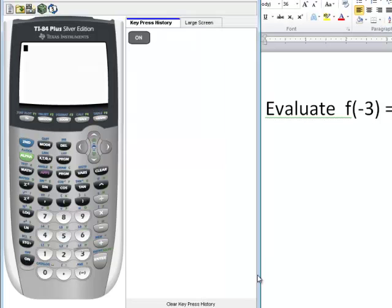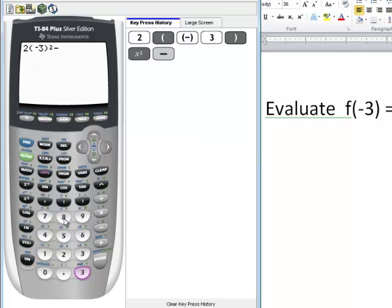The first way is the most basic way that students will use the calculator. They would just substitute in the value of negative 3 everywhere we have an x. They would go through and just type in each of these values, and you can use the multiplication symbol as well.